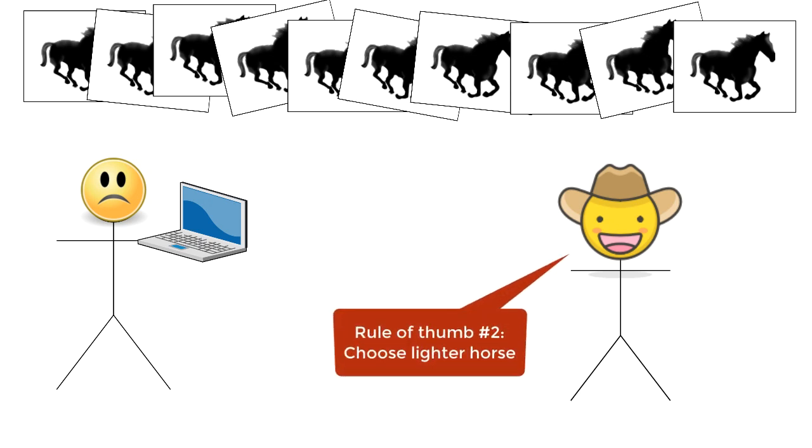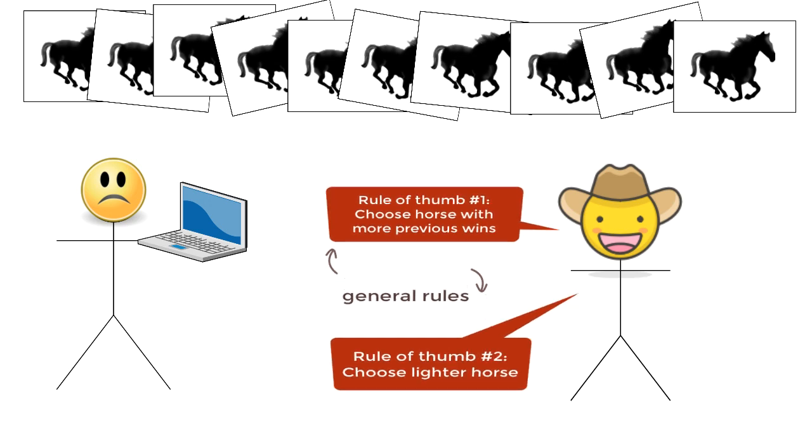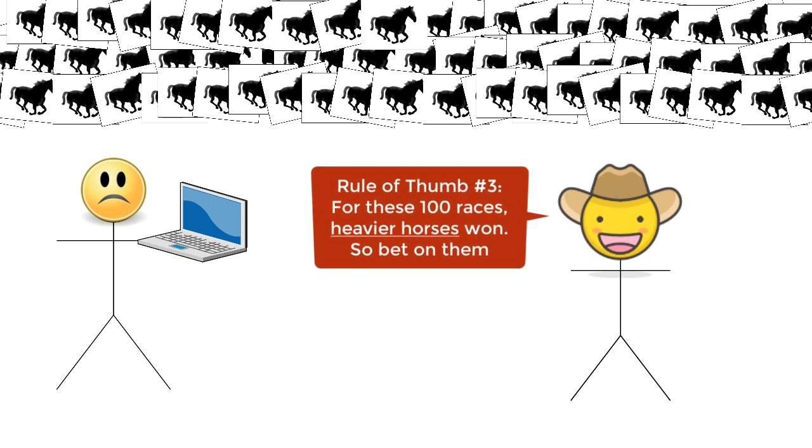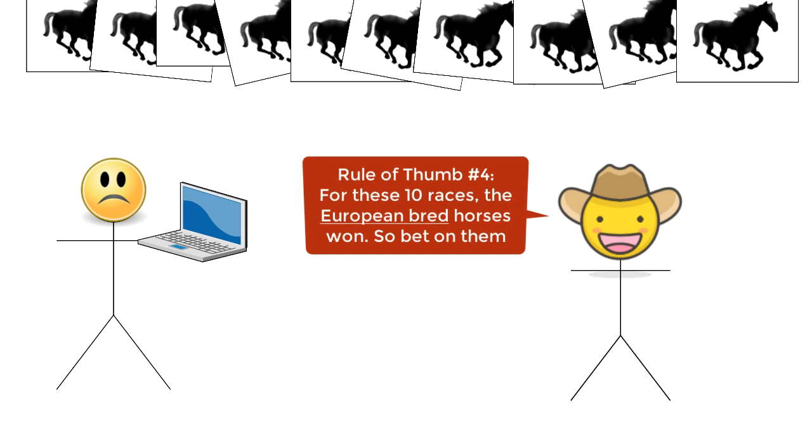If we were to present another collection of 10 different races, then the expert may say, well, for these 10 races, it looks like the lighter horses performed better. So you should bet on the lighter horses. Now, these rules are very general. And while these rules of thumb are still better than a random guess, they are still quite inaccurate. The lighter horses may have had an edge in these last 10 races, but we can come up with probably 100 other cases where the heavier horses may have won.